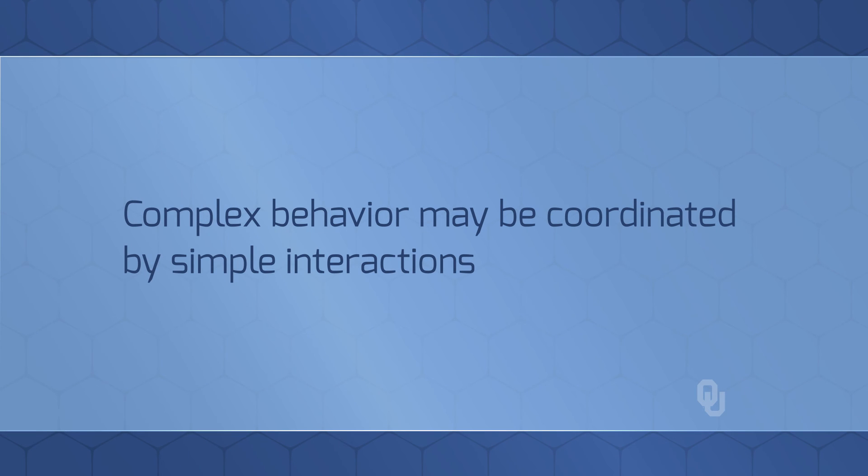Simple creatures following simple rules, each one acting on local information. No ant sees the big picture. No ant tells any other ant what to do. The bottom line is that no leadership is required. Even complex behavior may be coordinated by relatively simple interactions. We're going to exploit this property of simple agents and simple rules to look at some complex behaviors and solve some complex problems.